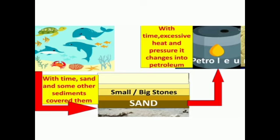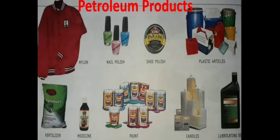Petroleum is formed from the dead remains of ancient land and sea creatures. Millions of years ago, the remains of these living things got buried in layers and gradually changed into oil and gas. In India, petroleum is obtained from Ankleshwar (Gujarat), Digboi (Assam) and Mumbai High off the Mumbai coast. It is also used for dry cleaning, making lubricating oil, printing ink and medicine.